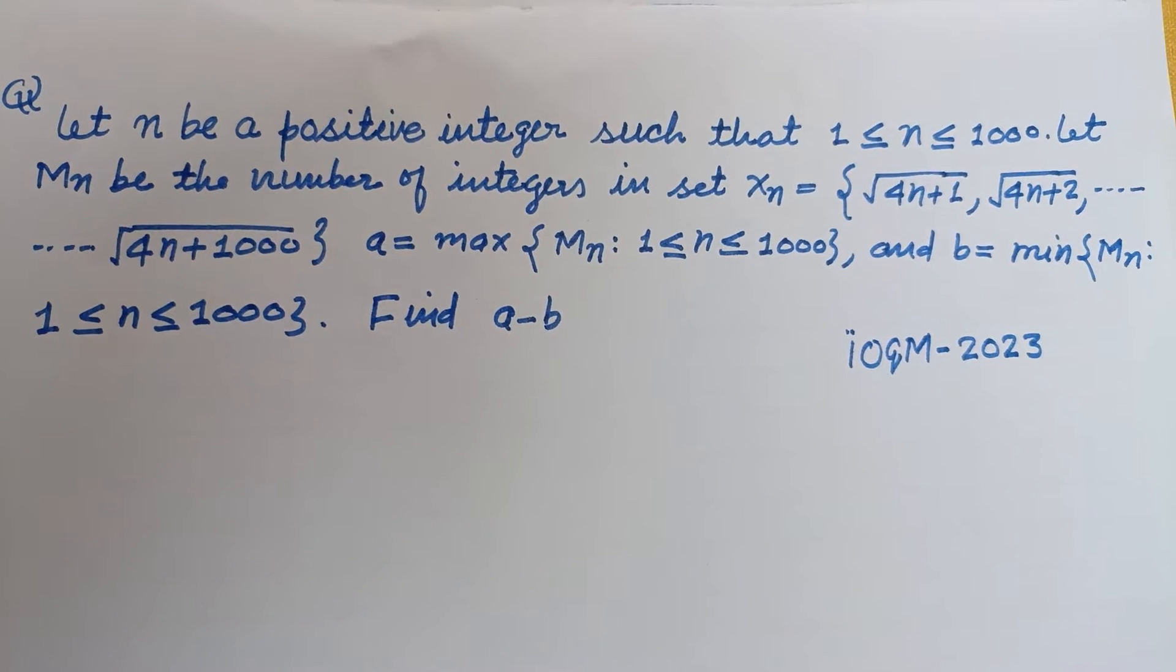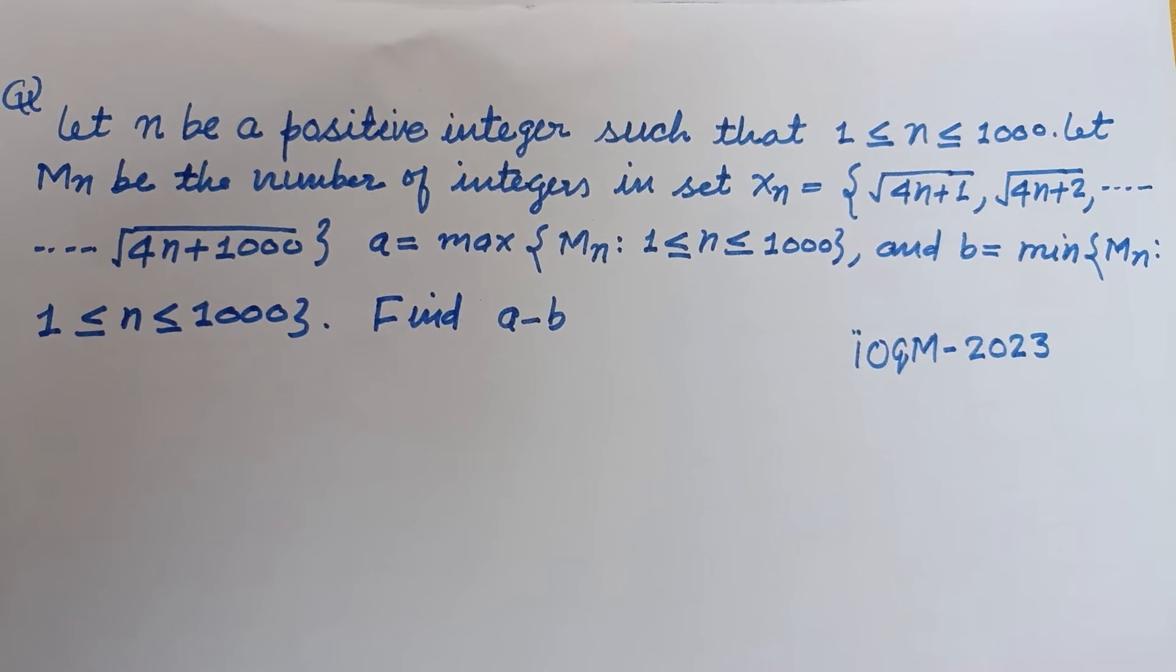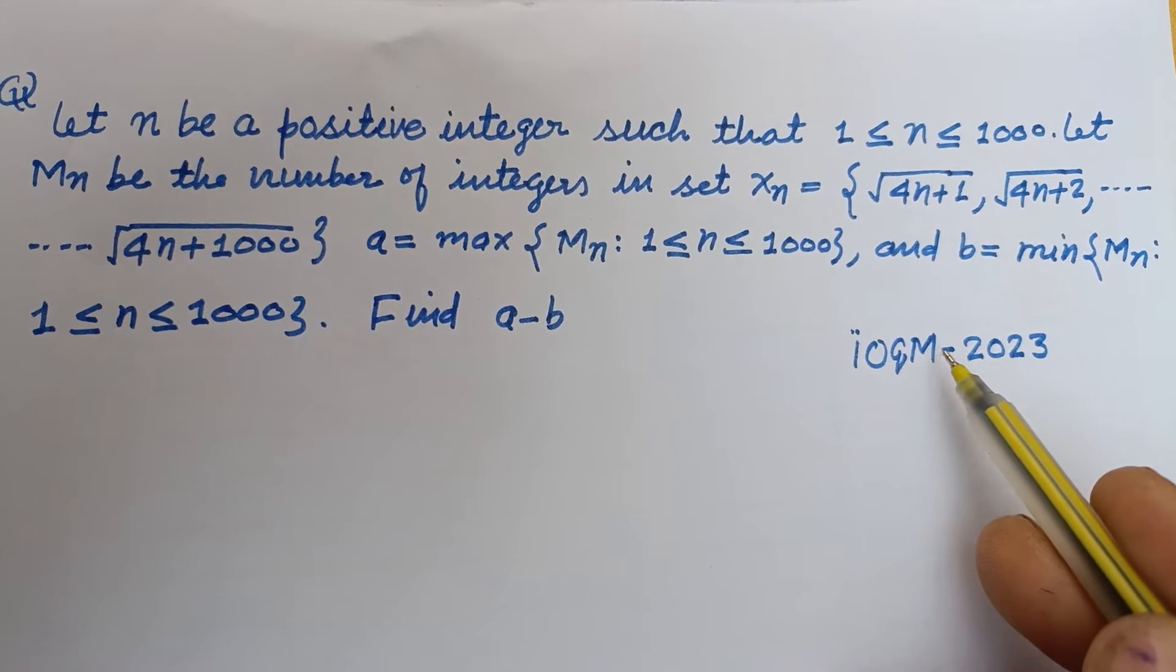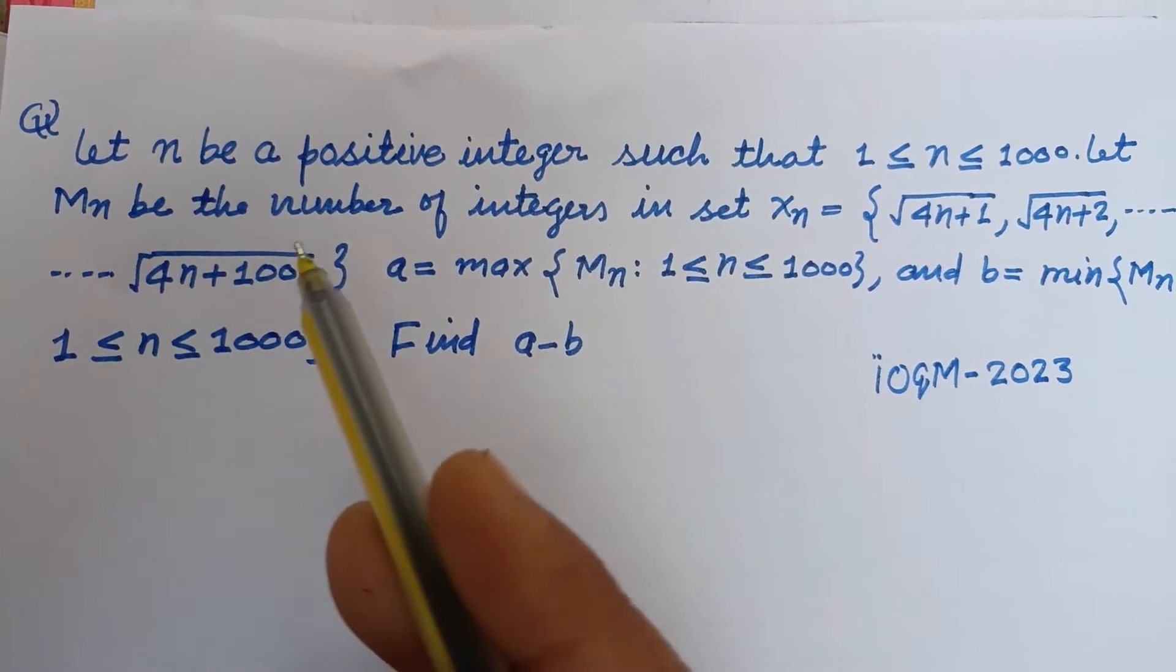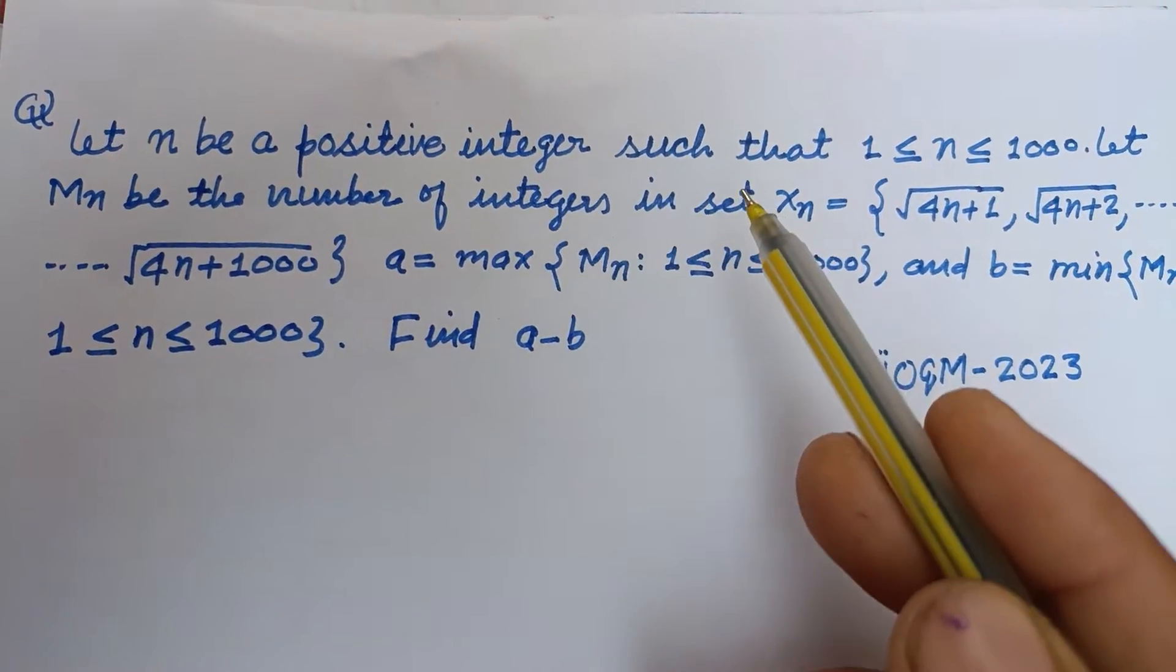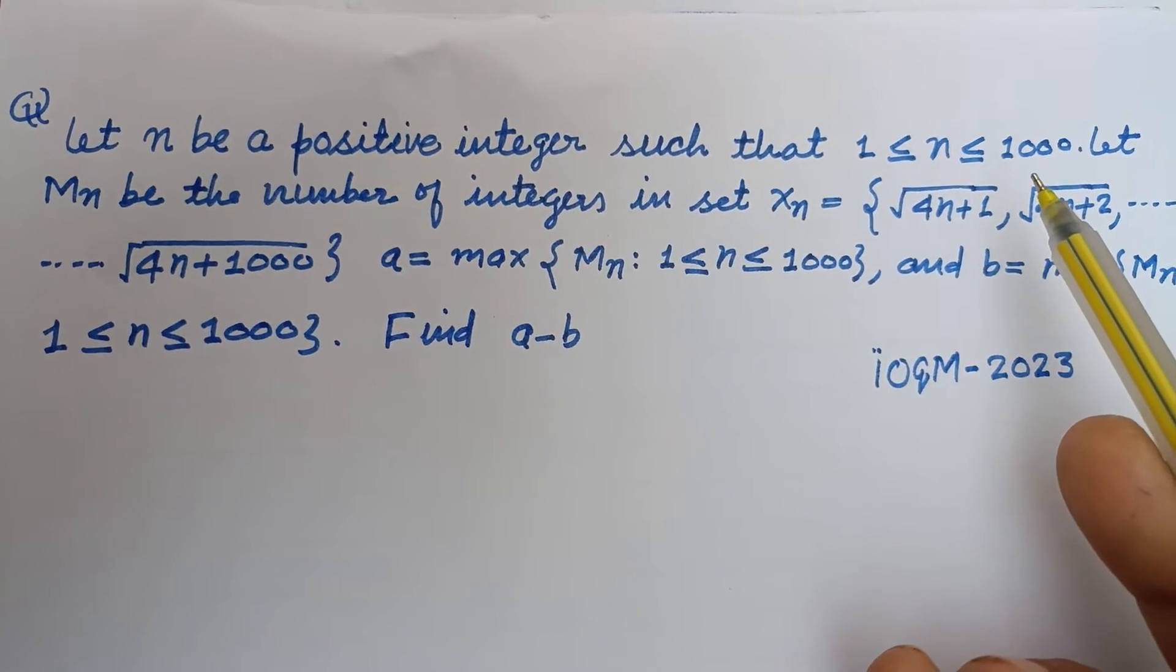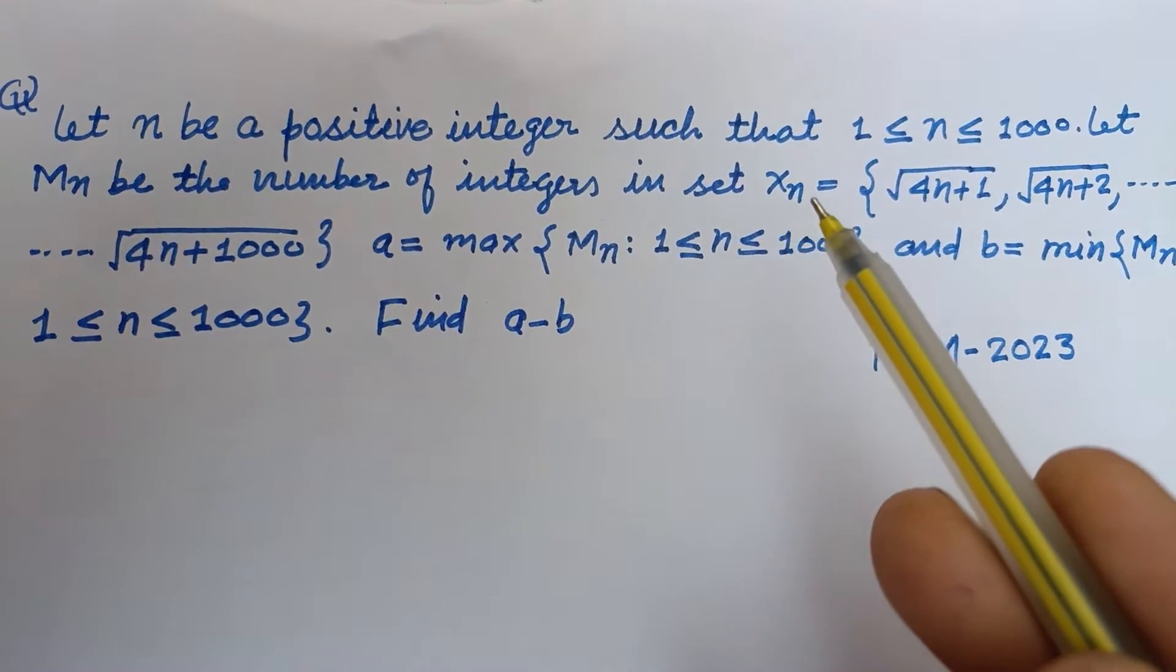Hello viewers, warm welcome to this YouTube channel. This is a question from Indian Olympiad Qualifier in Mathematics 2023. Let n be a positive integer such that 1 ≤ n ≤ 1000. Let Mn be the number of integers in set Xn.